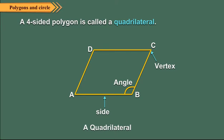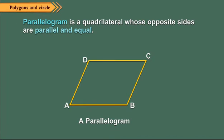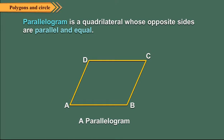A four-sided polygon is called a quadrilateral. It has four angles and four vertices. Quadrilaterals can be classified into various categories. A parallelogram is a quadrilateral whose opposite sides are parallel and equal. In a parallelogram, opposite angles are also equal. In quadrilateral ABCD, AB is equal to CD and AB is parallel to CD; also AD is equal to BC and AD is parallel to BC. So ABCD is a parallelogram.